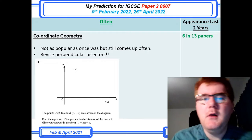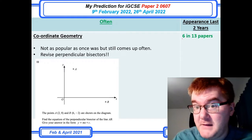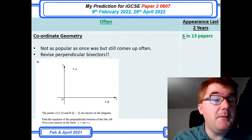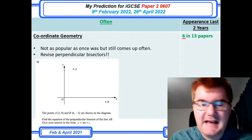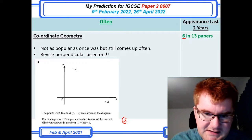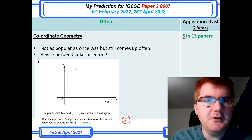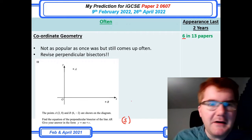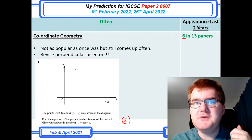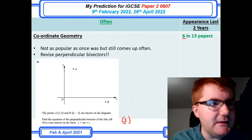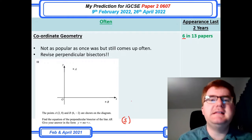Coordinate geometry always used to be one of my very top topics, though it's slightly come down from six in 13 papers. Perpendicular bisectors appeared on the Paper 2-1 last year — a five-mark question that's very typical, coming up in a majority of years. You'll need to know how to work out a gradient, the perpendicular gradient to that, and the midpoint as well — all of those feature in this kind of question.